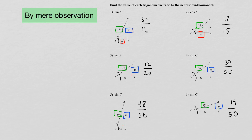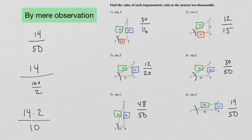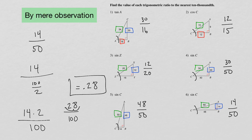And the last one, number six — sine of C is 14 over 50. Once again using our Vedic math formula by mirror observation: 50 is 100 over 2, so that's 14 times 2 over 100. Remember, when you're dividing by a fraction you flip and multiply — that gives us 28 over 100, so our answer is 0.28. Sine of C is 0.28.